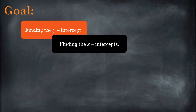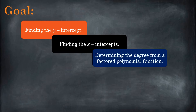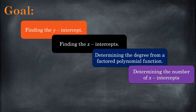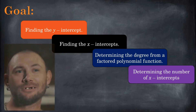We're also going to talk about finding the x-intercepts. We're just going to use things you know from learning about quadratic equations and factoring, but we're going to revisit finding x-intercepts again in the future as we develop more tools. For now, it involves factoring. We're also going to be able to determine the degree of a factored polynomial function by looking at it, and find the maximum number of x-intercepts of a given polynomial function.